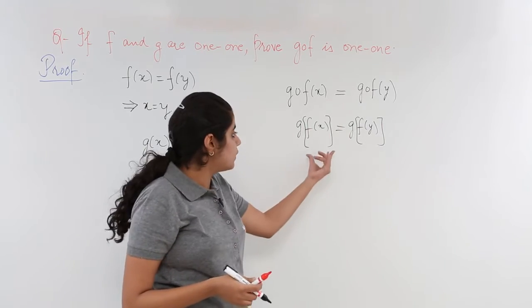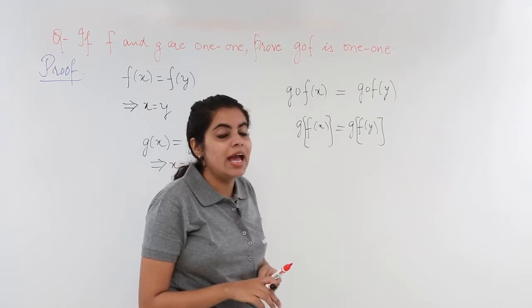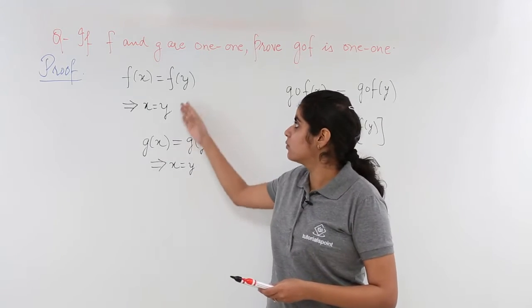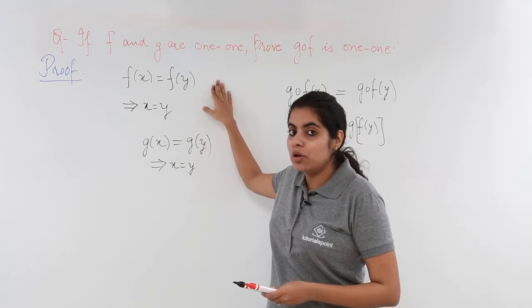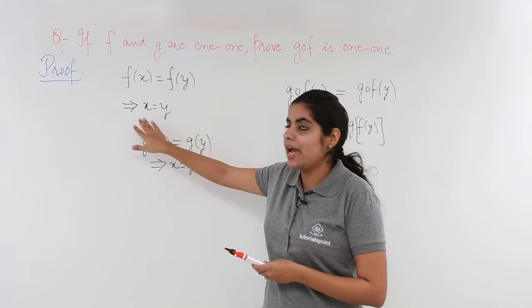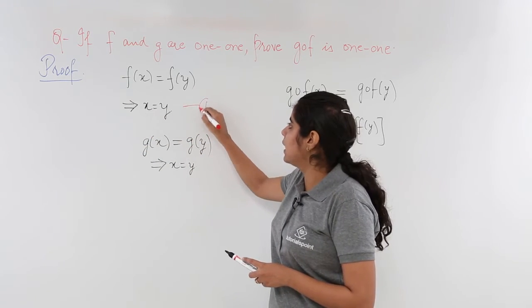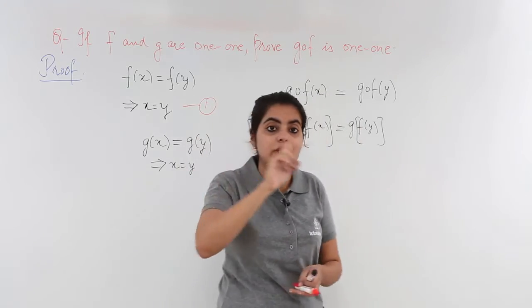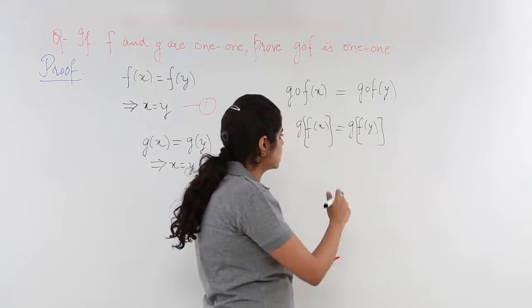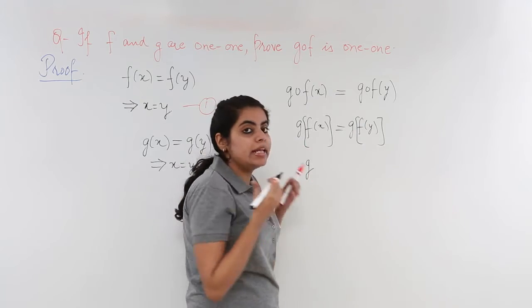Now we have here f(x), we have here f(y), and f(x), f(y) were here also. What is the value of f(x) and f(y)? x and y basically. So from this equation, which can be taken as equation number one, if we put it in here, I just have g, and in place of f(x) I can write x.